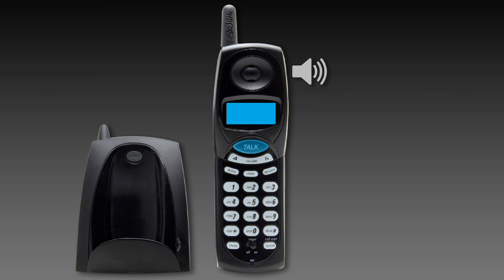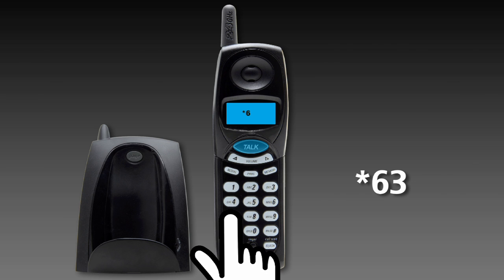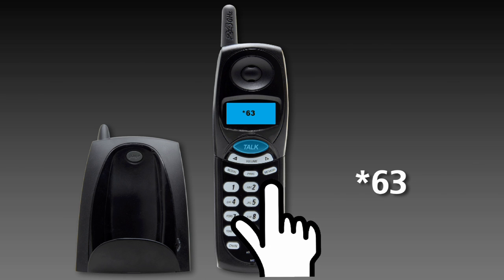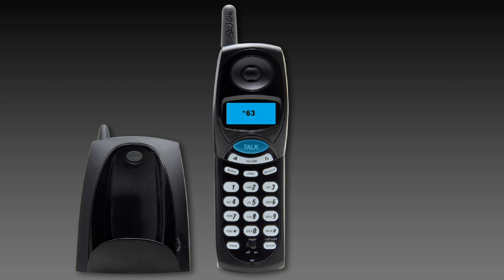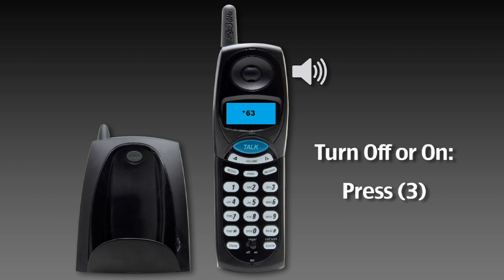To add or remove numbers from your list, or to turn off Selective Call Forwarding, lift the handset and listen for the dial tone. Dial star 63 and follow the voice prompts. To turn this service off, dial 3.